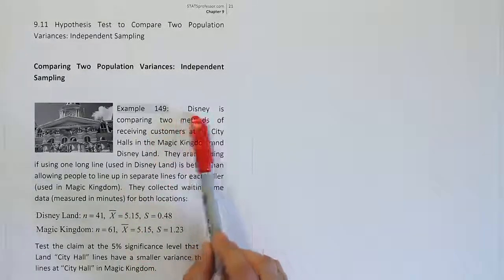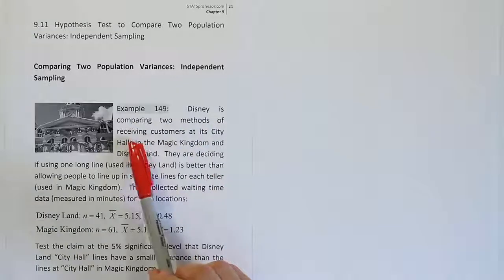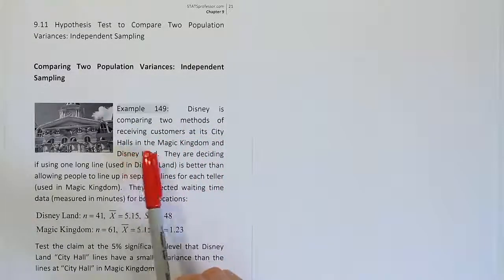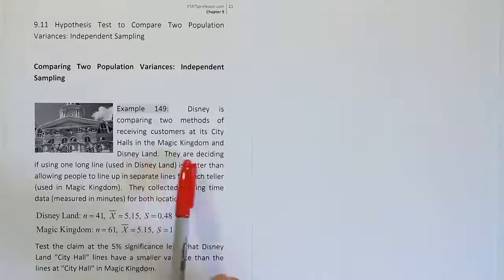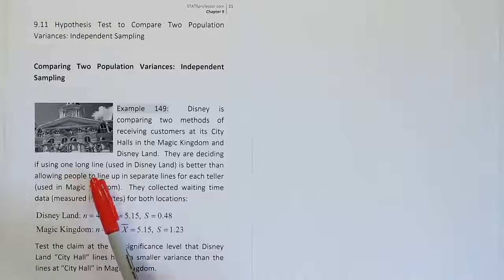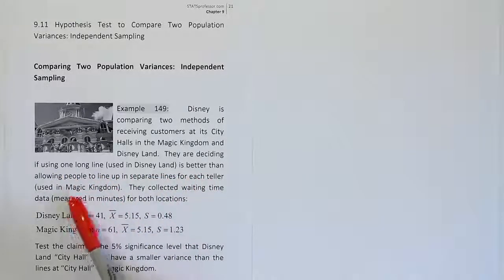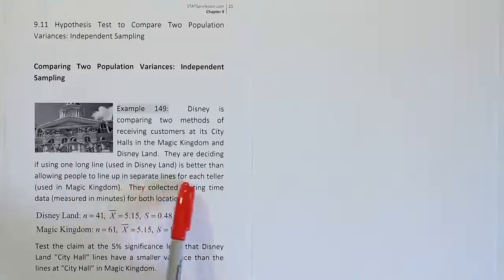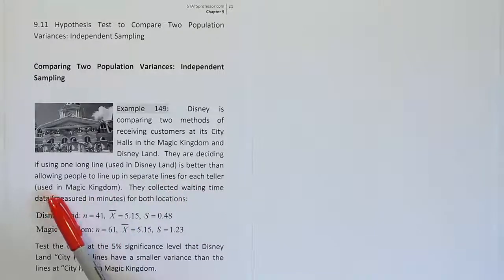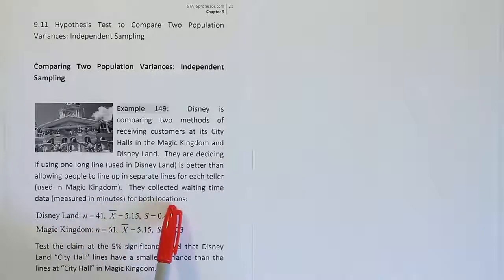Example 149. Disney is comparing two methods of receiving customers at its City Halls in the Magic Kingdom and Disneyland. They are deciding if using one long line used in Disneyland is better than allowing people to line up in separate lines for each teller. That's how they do it in the Magic Kingdom. They collected waiting time data measured in minutes for both locations.